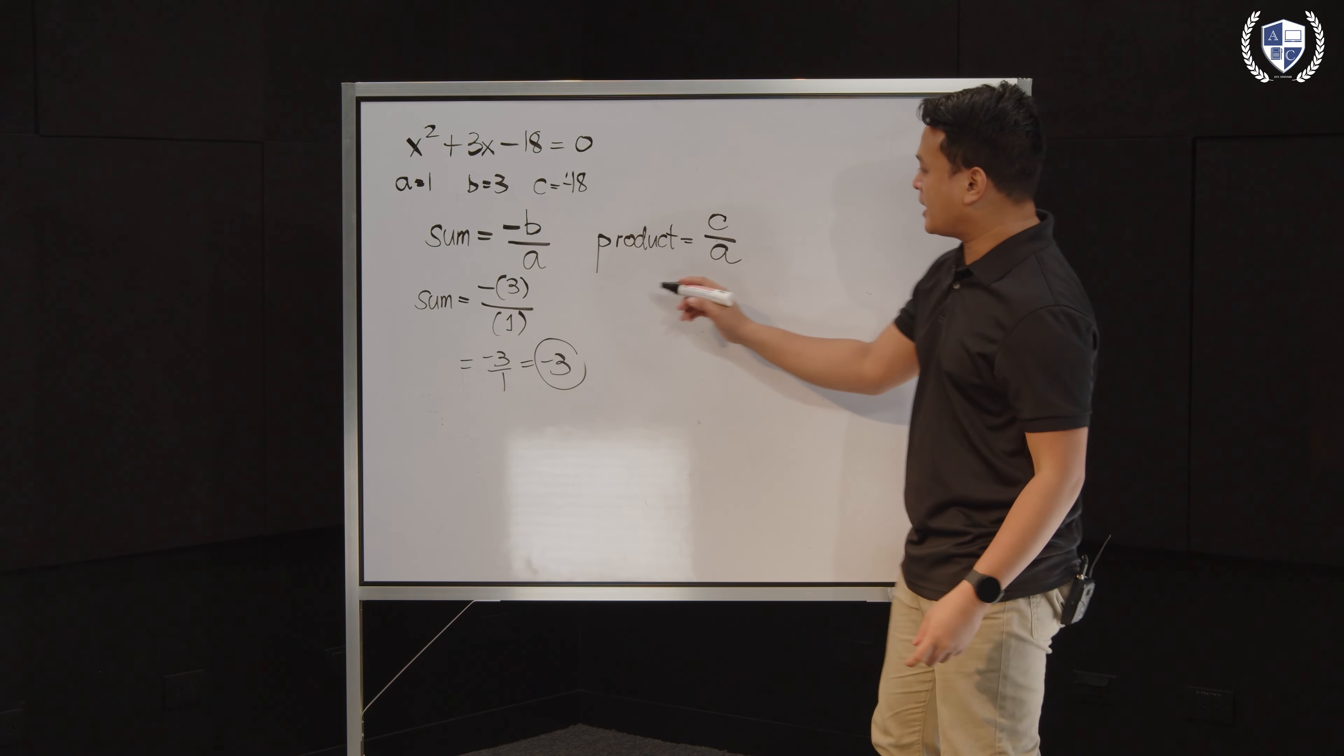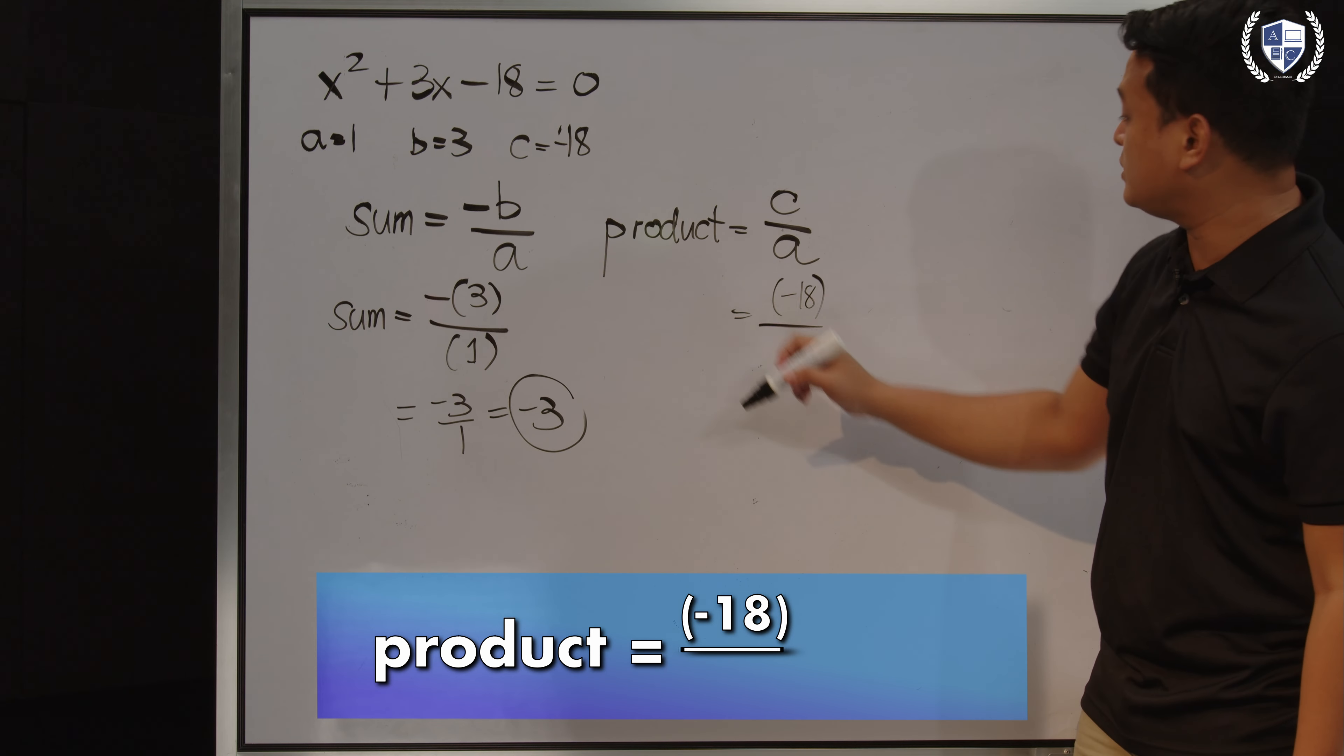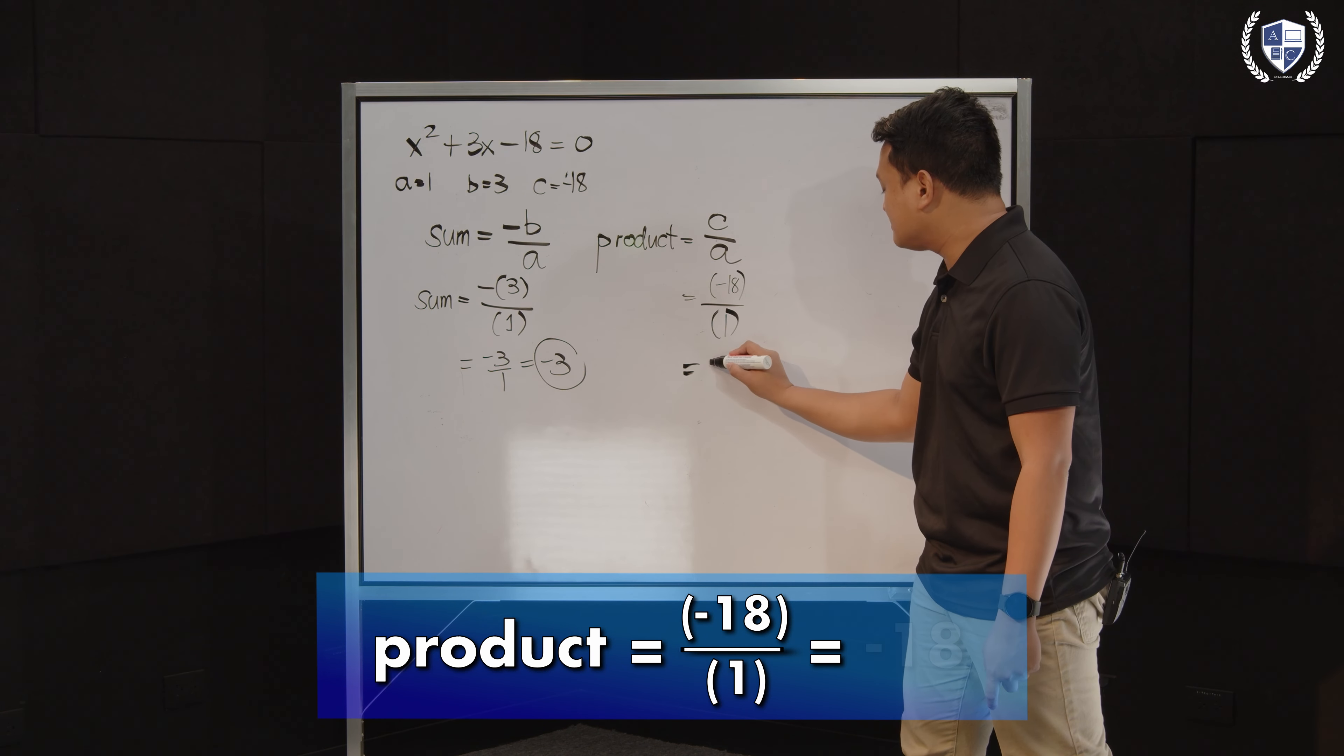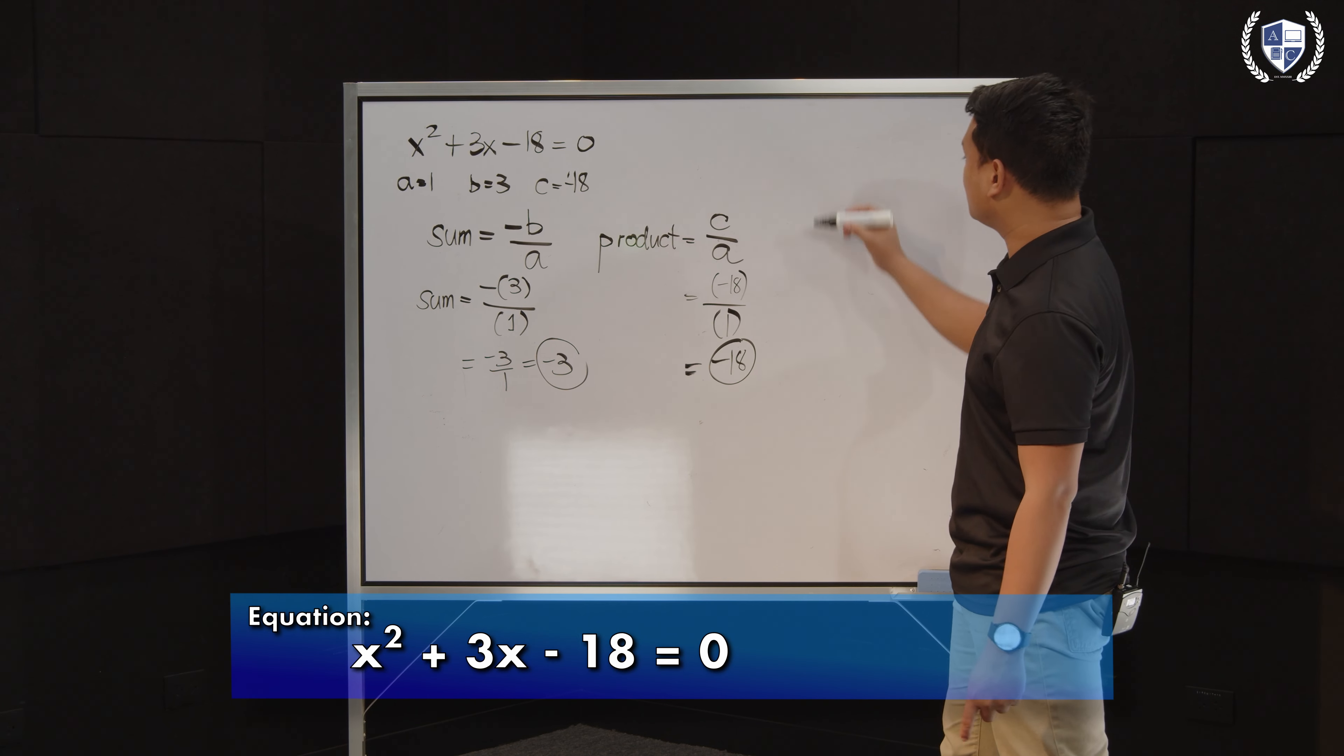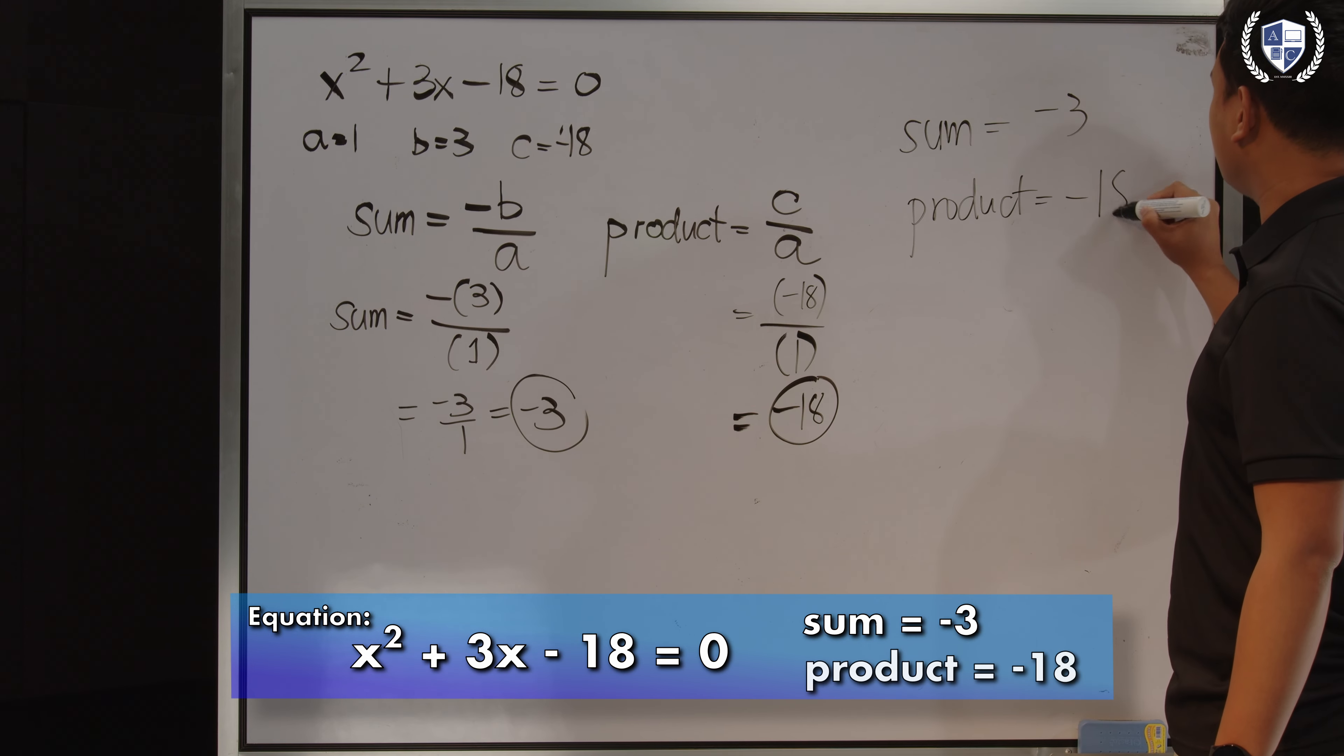Paano naman yung sa product? So sa product, ganun din. Using the formula C over A, papalitan natin yung C ng value ng C. Ano ba yung value ng C natin? It's negative 18, and the value of A, we replace that with 1, kasi 1 yung value ng A natin, and then we simply reduce our fraction. Simplify natin. Negative 18 over 1, that's negative 18. So therefore, kaya na natin sagutin yung tanong na pinresent ko sa inyo kanina. Ano yung sum at products, ay na yung sum at product ng roots ng ating quadratic equation? The sum of the roots is equal to negative 3, while the product is equal to negative 18.